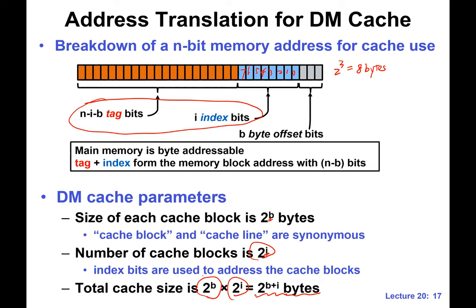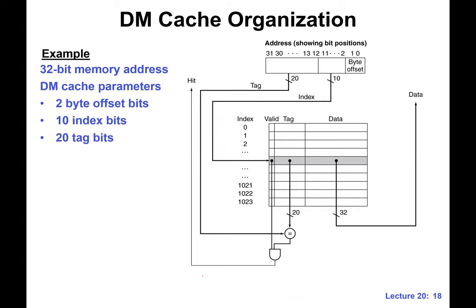A student asks: how are the tag bits known if the instruction accesses the cache and not main memory? Good question — we are going to explain that. So if this is more or less clear, let's look at a concrete cache design.